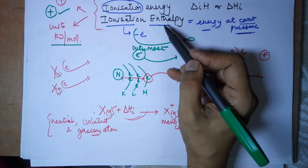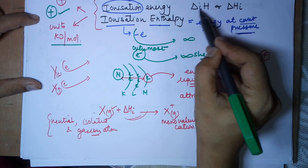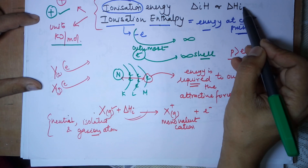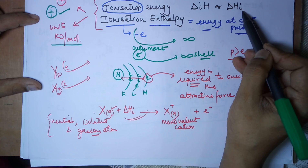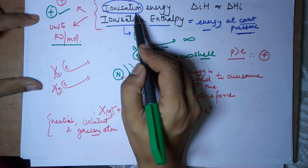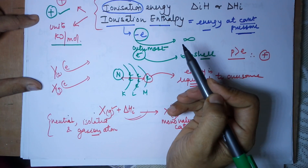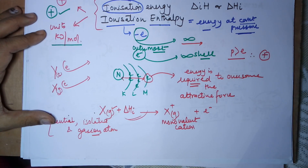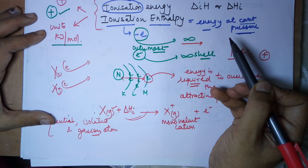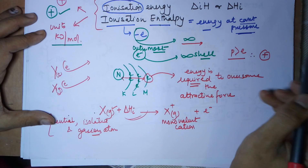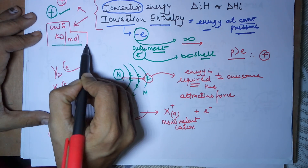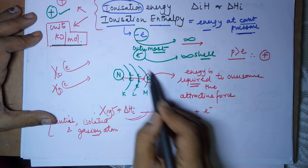So all measurements of energy in chemistry are generally enthalpies. This ionization energy is represented as ΔᵢH, where I is for ionization and H is always for enthalpy. It is also written as ΔHᵢ — the H stands for enthalpy, I stands for ionization. Ionization means removal of an electron — specifically the outermost electron, which is to be removed to an infinite place, outside the bounds of the nucleus. The units of ionization energy are always kilojoules per mole.